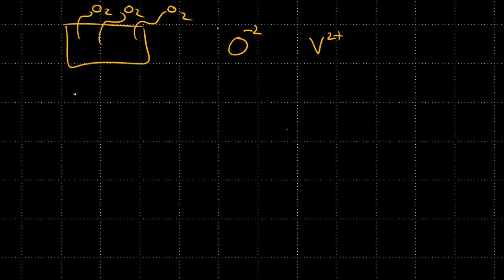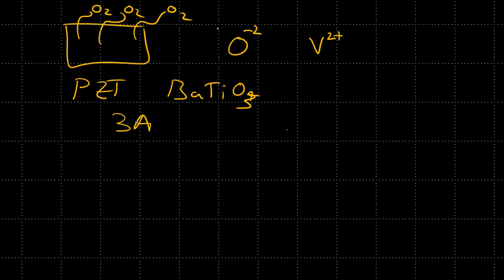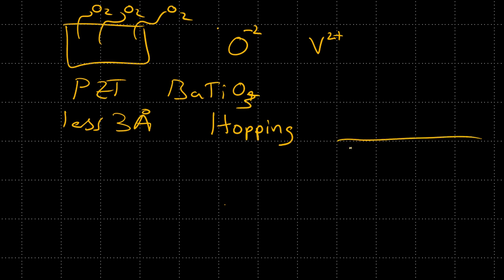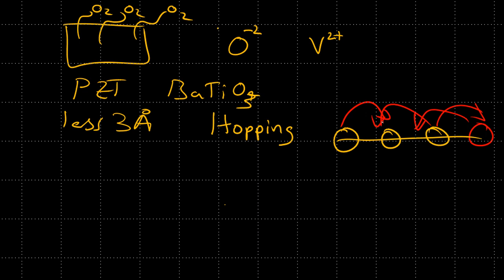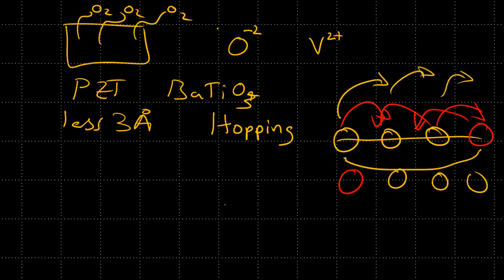In a material like lead zirconate titanate or barium titanate, the distance between the oxygens is very small — about three angstroms or less. Therefore, there is hopping going on; atoms can actually move within the material. So if we have a string of oxygens with an oxygen vacancy, these atoms can move — one hops to the next position — and we end up with a different organization of atoms. The vacancy effectively moves all the way to the end.